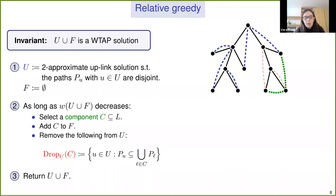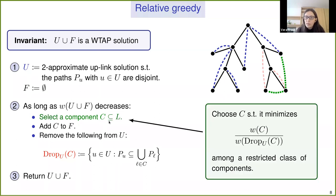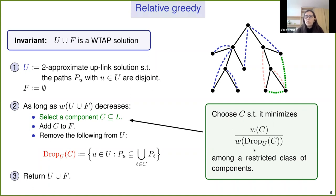The key question is how to select component C. We choose C from a restricted class of components, selecting the one that minimizes the ratio between the weight of the component divided by the weight of the drop set — locally minimizing the exchange ratio. Two properties are needed: Property A — efficiently find the component minimizing this ratio; Property B — when U's weight is much larger than the weight of OPT, there should exist a component where the component weight is significantly less than the drop weight.